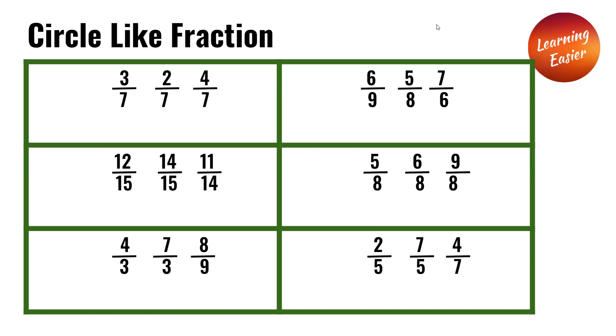Next is 5 over 8, 6 over 8, and 9 over 8. All three of these are like fractions because they have the same denominator.